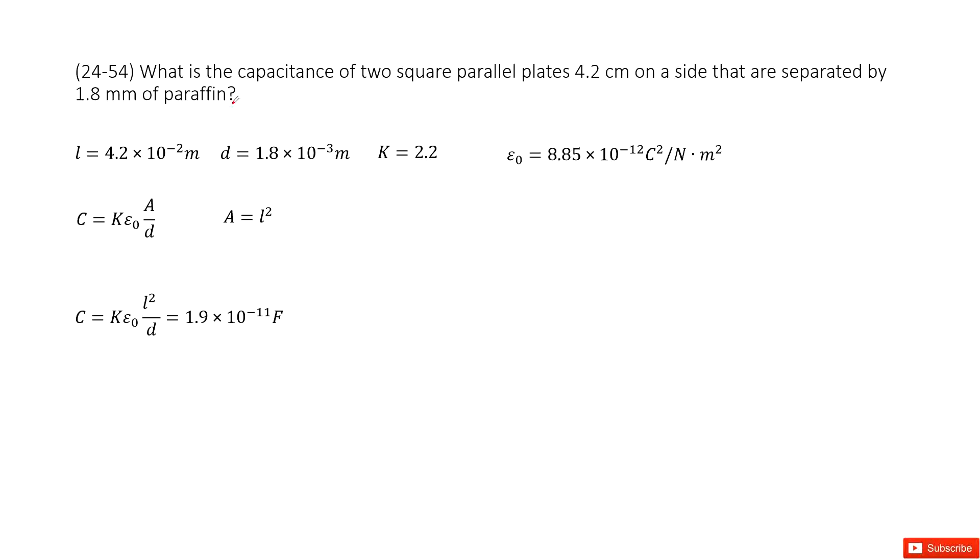We just list all the given quantities. First one given is the side length, right? So we write it there. And also it tells us the distance between two planes. We write it there.